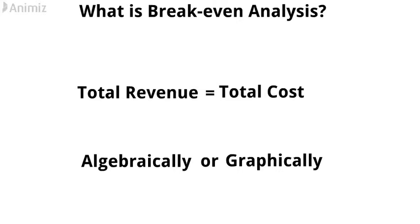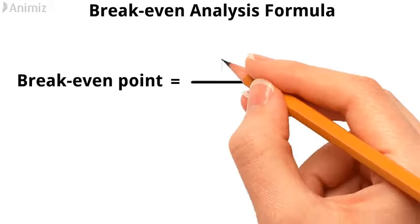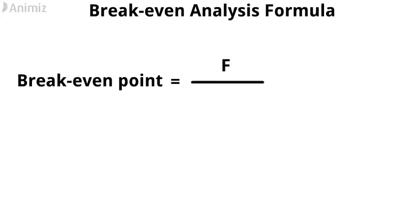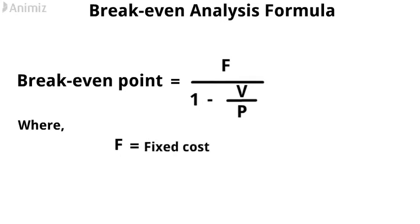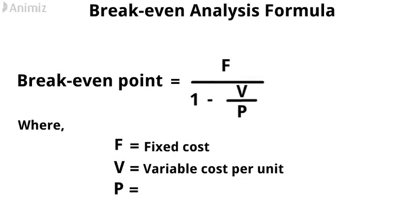Now, the break-even analysis formula. The break-even point can be calculated using the following formula: Break-even point equals F divided by (1 minus V divided by P), where F equals fixed cost, V equals variable cost per unit, and P equals the selling price of each unit.